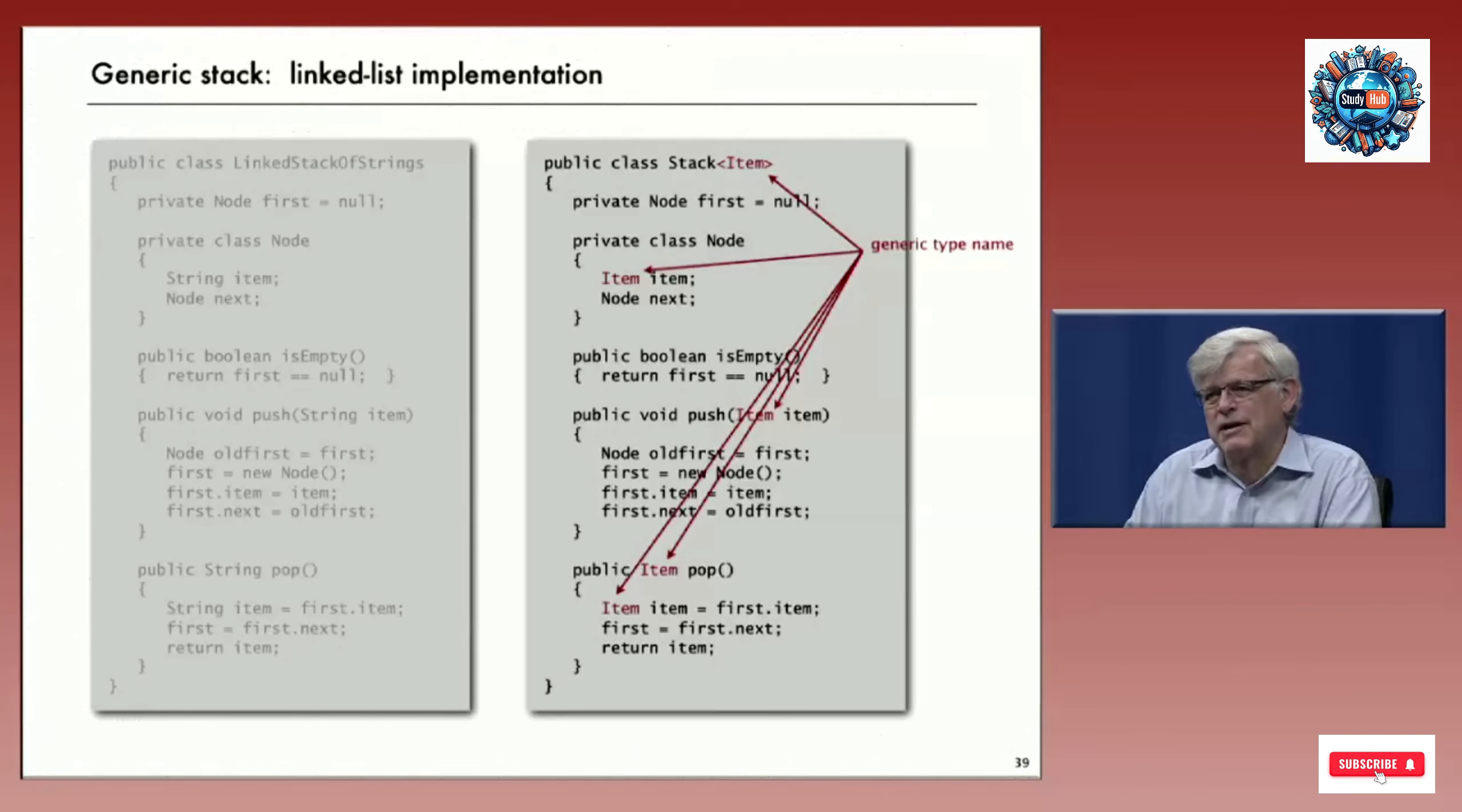At the top, in the class declaration, we declare in angle brackets that item is the generic type that we're going to use. The implementation could hardly be more straightforward and it's an excellent way to solve the problem of handling multiple types of data with one implementation.